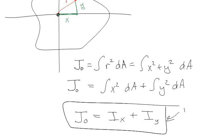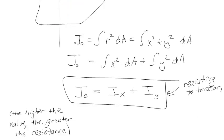It does save you some time, but again, what you want to be thinking is that this is the resistance, resisting to torsion. And again, the greater the value of that J₀, the greater the resistance to torsion.